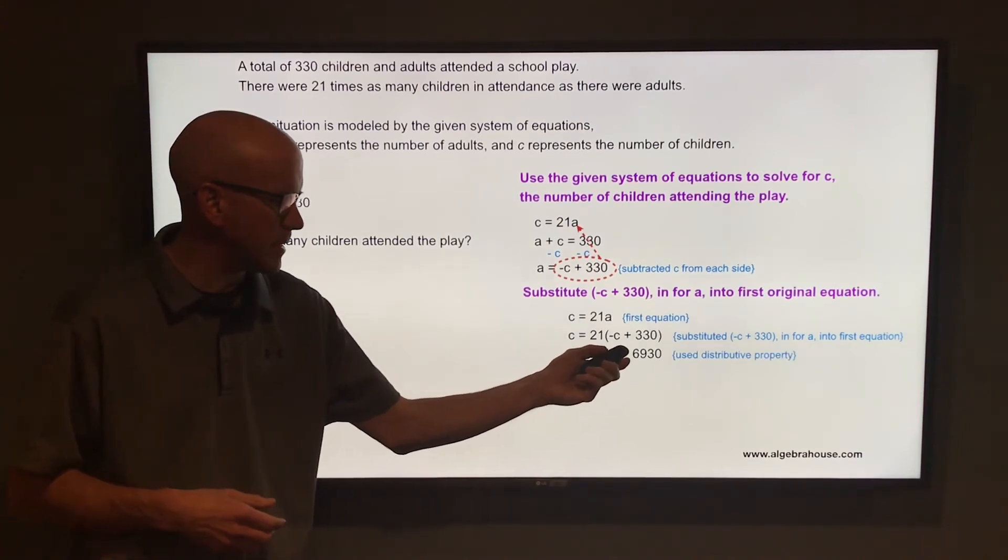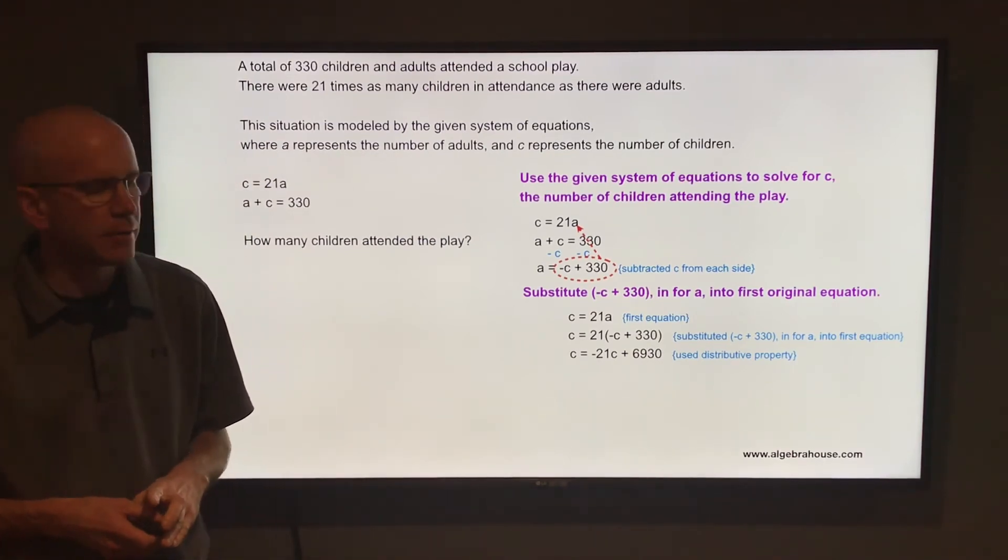Take 21 times negative C, that is negative 21C. And 21 times 330, that is 6,930.